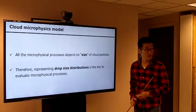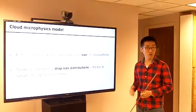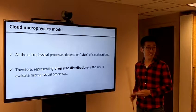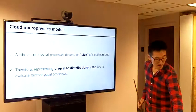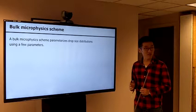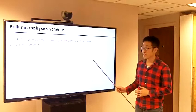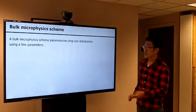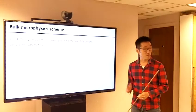If somebody asked what is the most important thing in the cloud microphysical model, I would say it is how to represent the drop size distribution in a model. There are typically two types of microphysical schemes. The first one is the bulk scheme. A bulk scheme parameterizes the drop size distribution using just a few parameters — typically no more than three.